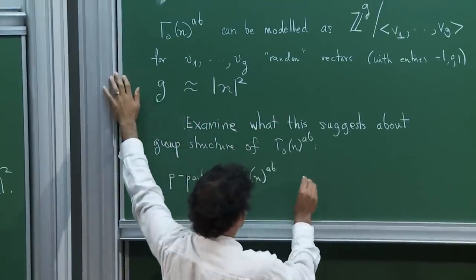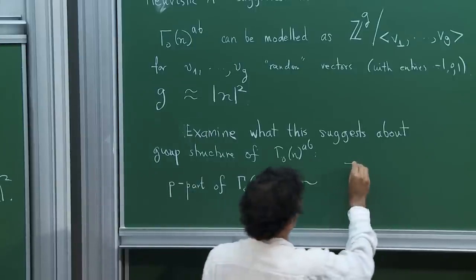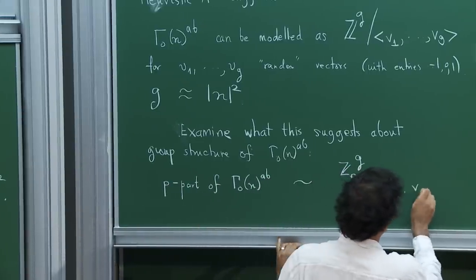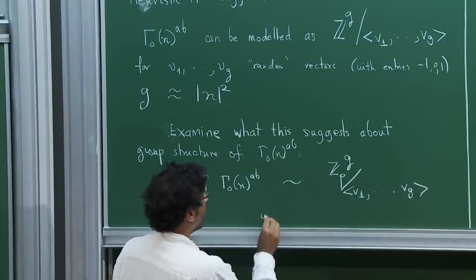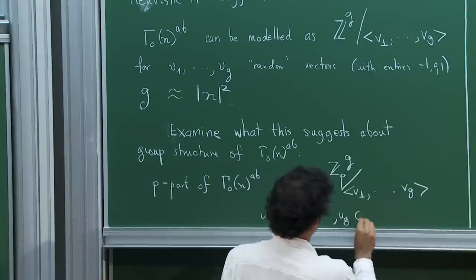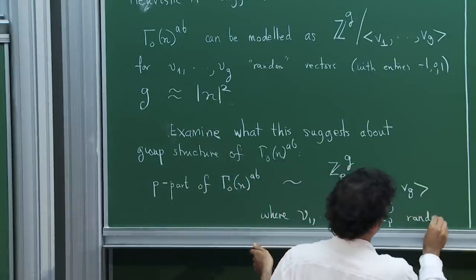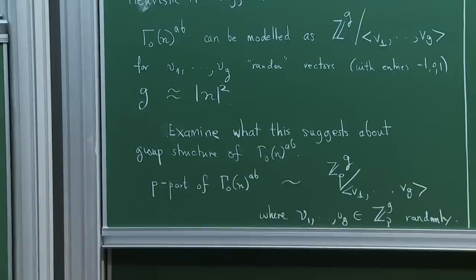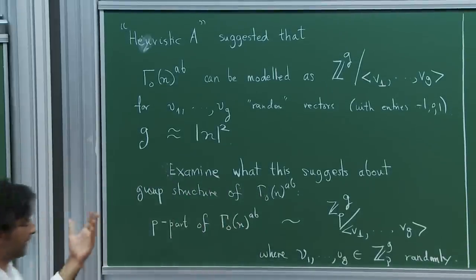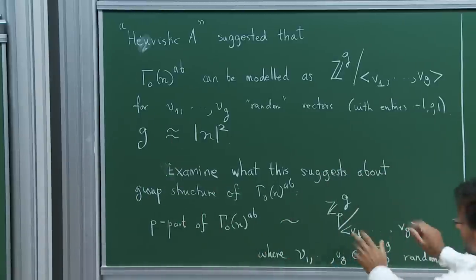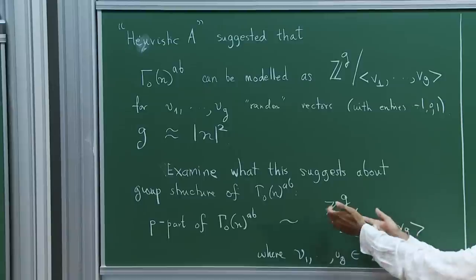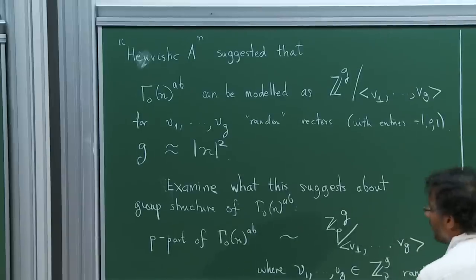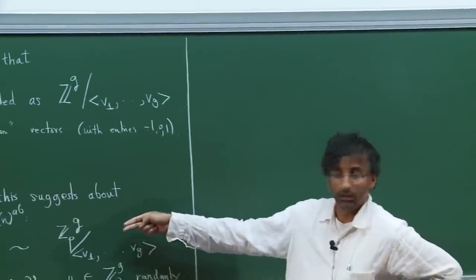If you believe this, you would think the p-part can be modeled as: take p-adic integers Z_p to the g, quotiented by g random elements v1 through vg chosen as random vectors in Z_p to the g. The Archimedean constraint of minus 1, 0, 1 entries shouldn't have any influence on the group structure.